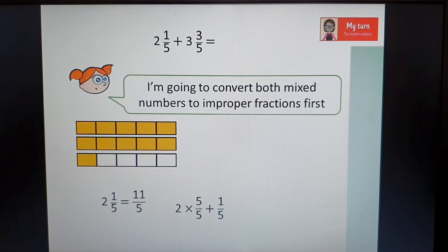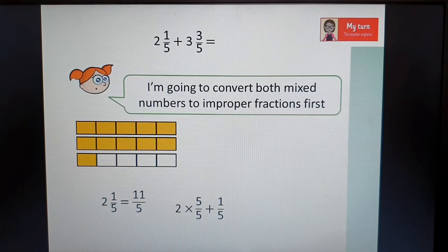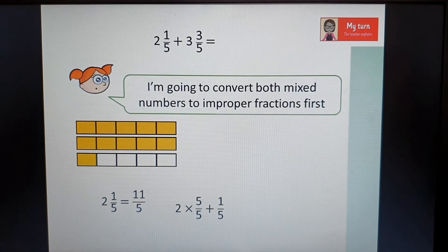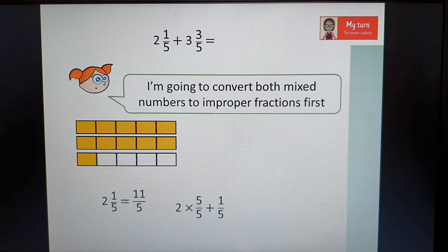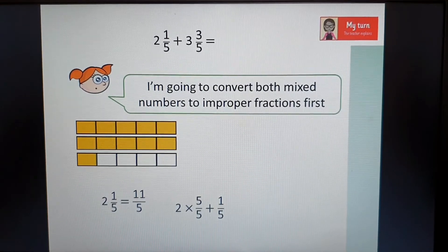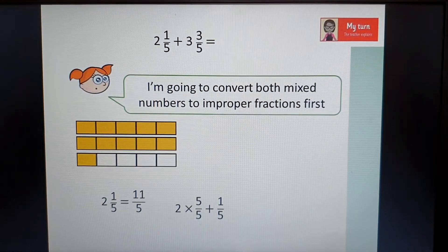This then can be written as eleven fifths. So I can actually just count out my bars and I have eleven pieces, eleven fifths. Or it's two lots of five out of five and then add on one more, eleven fifths. So that's my first part of the number sentence.